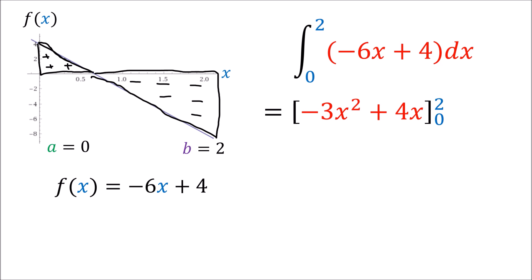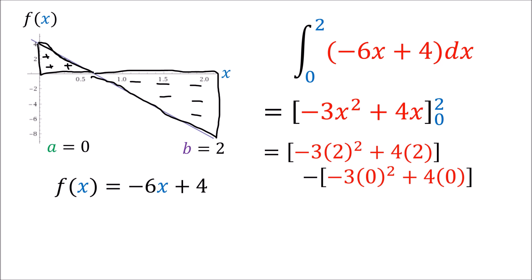To compute it, we just go ahead and compute the antiderivative, which is negative 3x squared plus 4x, and evaluate it at the endpoints 2 and 0. If we do that, we get negative 12 plus 8, which is equal to negative 4.